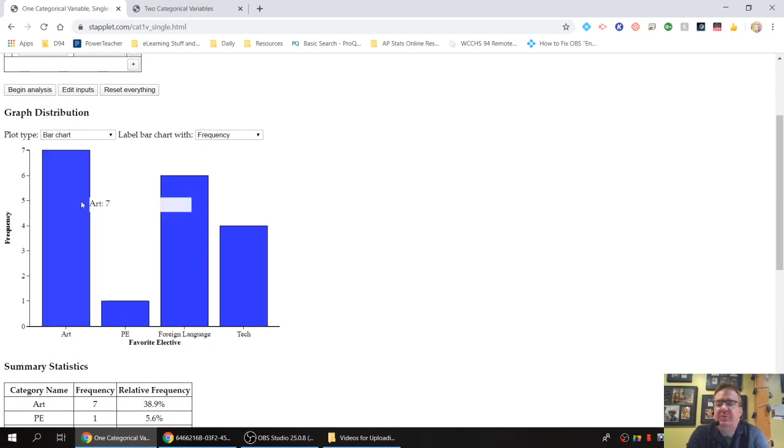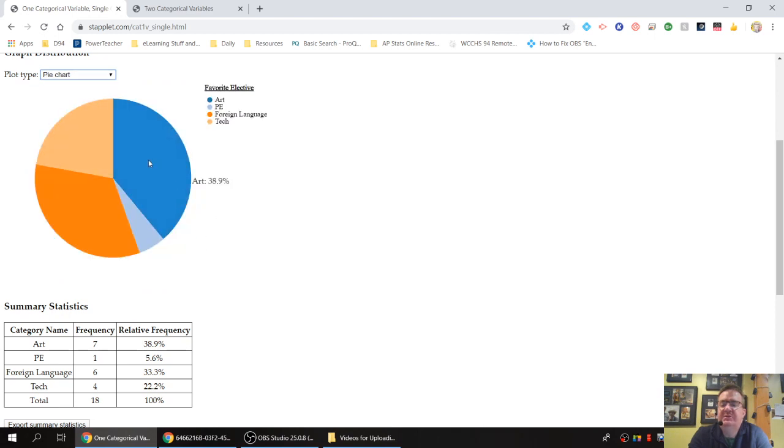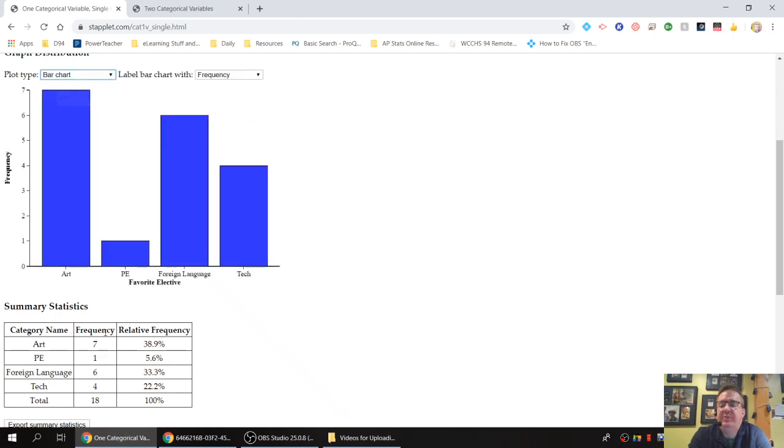If you look, it will even tell you how many there are as you go over it. And then down below, there's a table that gives you frequency and relative frequency. Frequency is how many actual things, how many actual individuals were surveyed. And then the relative frequency is the proportion of individuals surveyed. So in this case, the proportion out of the 18. Why is that important? Because if we change this to a pie chart, notice this is all done by proportions. So 38.9%, 22.2%, 33.3%, etc. Pie charts are based on relative frequency.